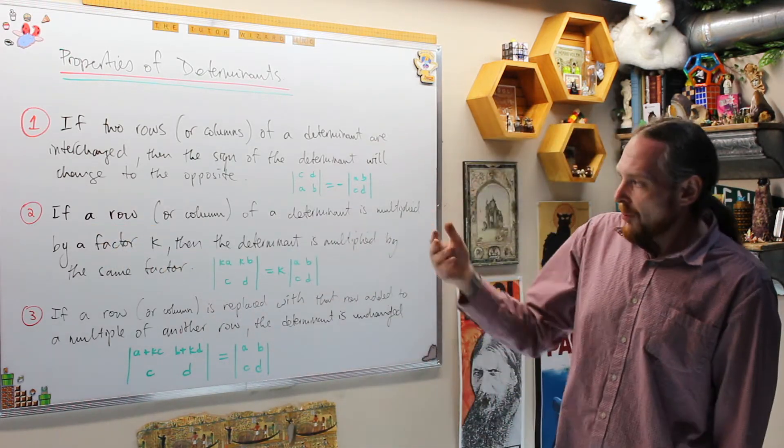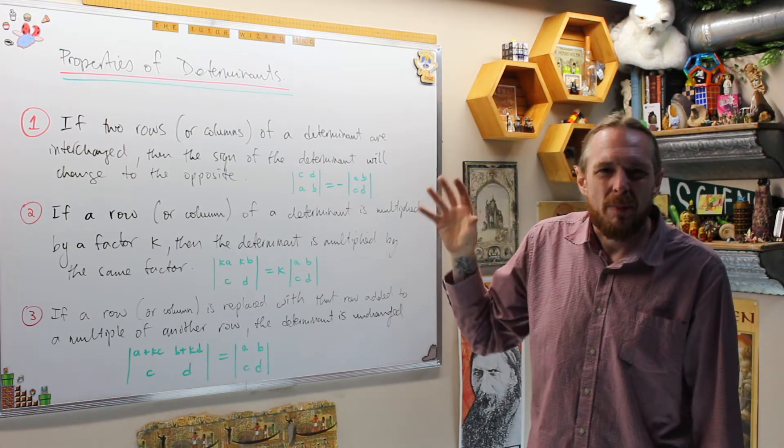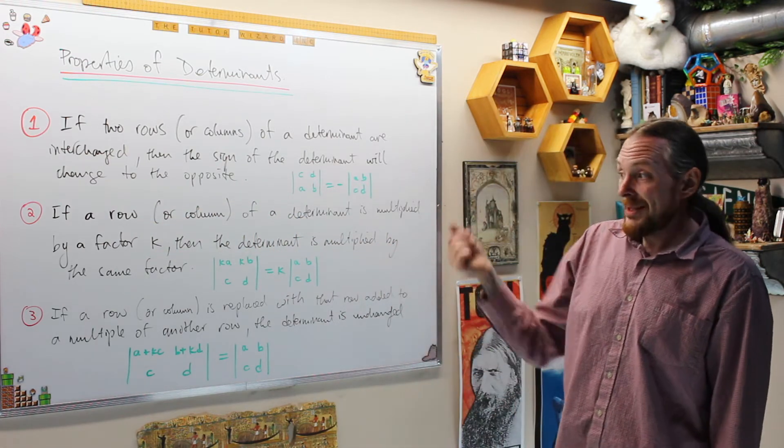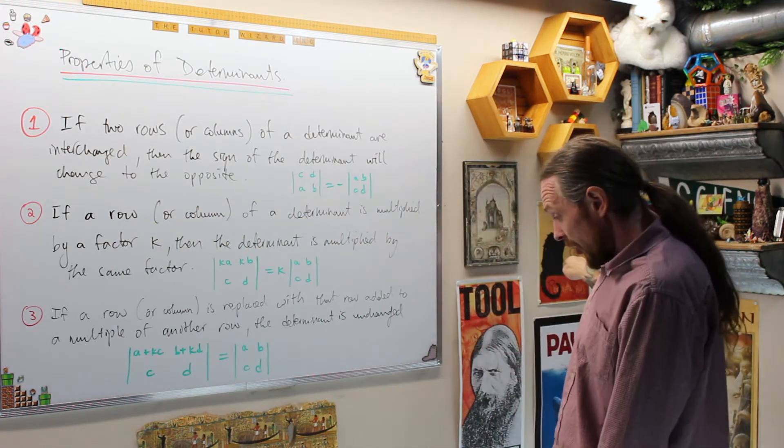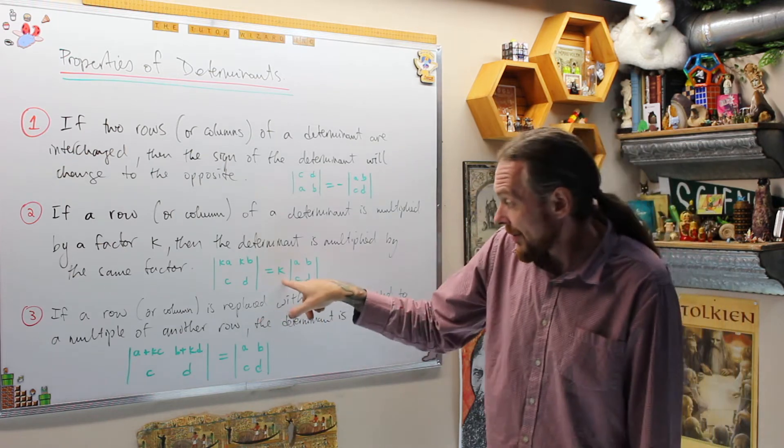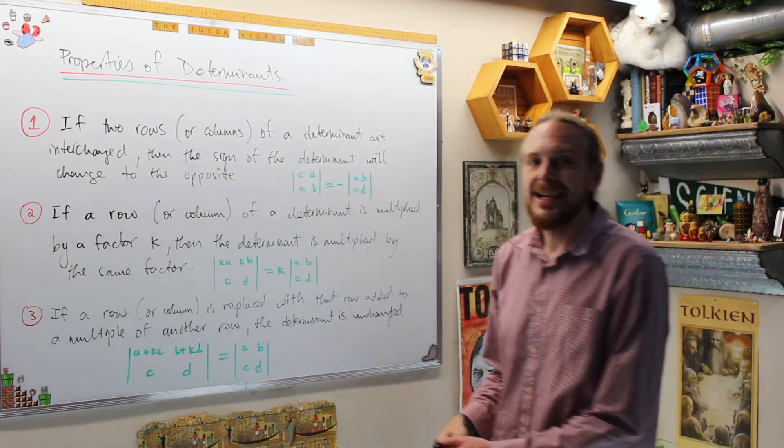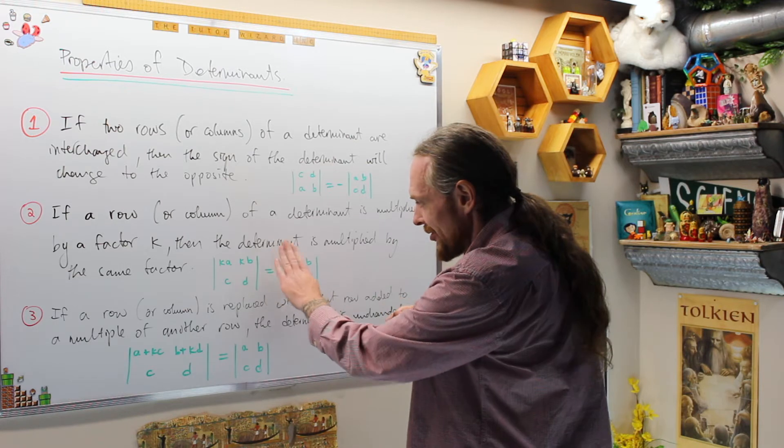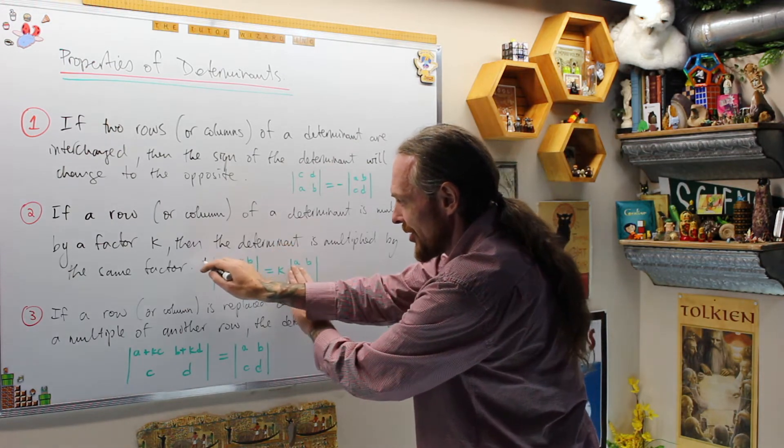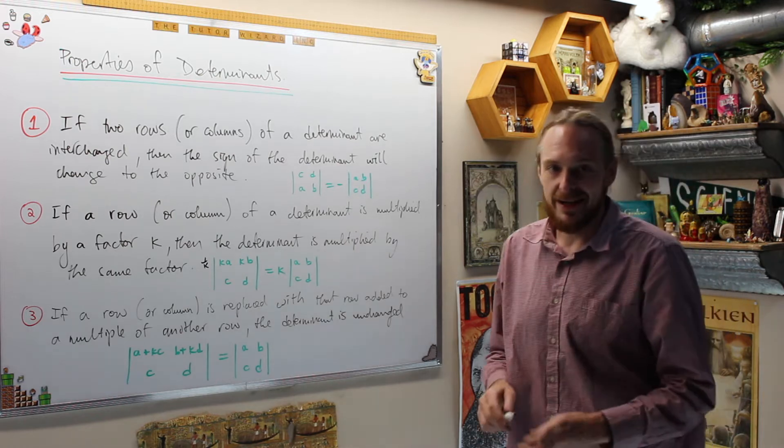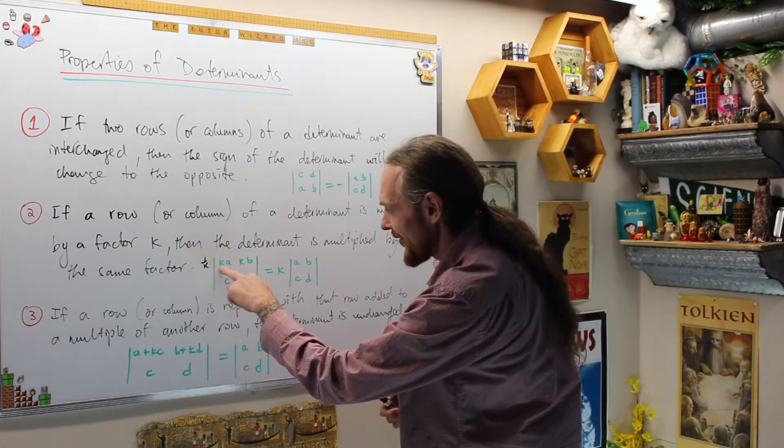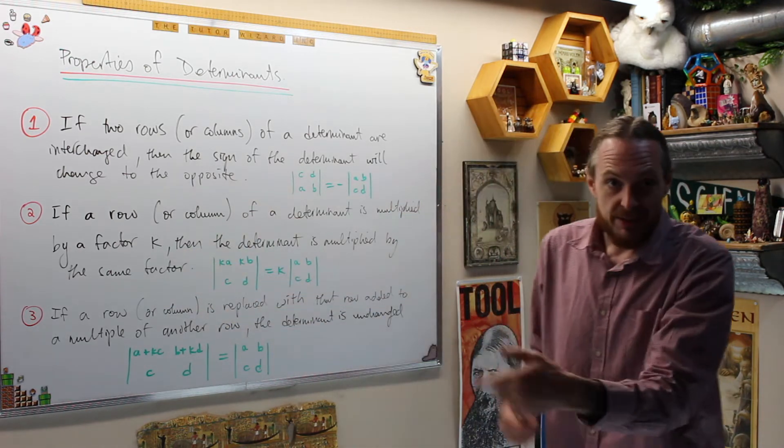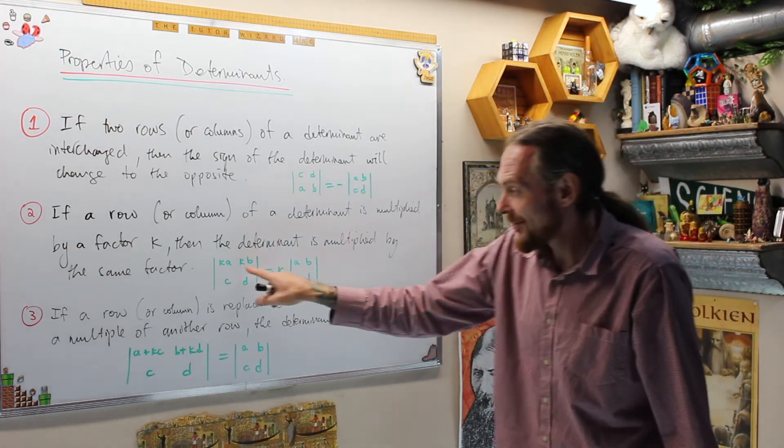Property two is if we have a row or column multiplied by a factor. Remember, this is not row operations. These are determinant properties. We're computing a number, a real number. If a row or column of a determinant is multiplied by a factor k, then the determinant is also multiplied by that factor. So basically, in row reduction, you would view this as an equation, but that's not what we're doing here. What it's saying is you have to see that you have k in both of the terms and factor it out.